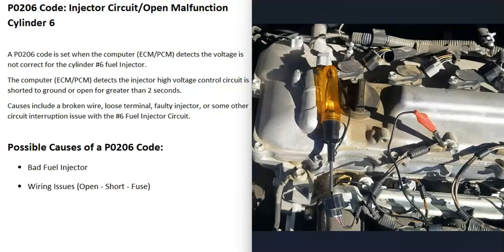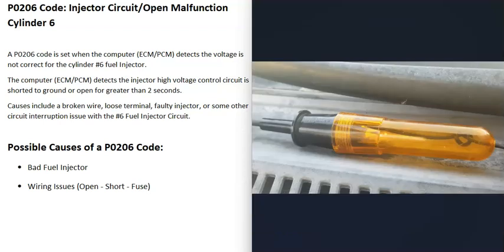When testing, use a separate ground when probing the positive wire, and use the positive side of the battery when testing the negative wire. The computer controls the negative side and pulses it when the engine is running, which makes it a bit more difficult to test. If you have a 12-volt test light, connect it to the negative side — when the engine is running, you should see that light start to pulse, indicating the computer is sending its signal correctly.